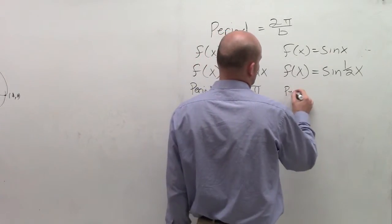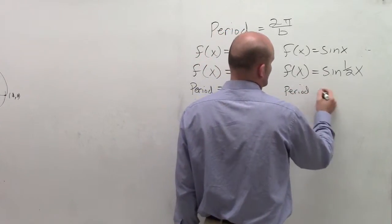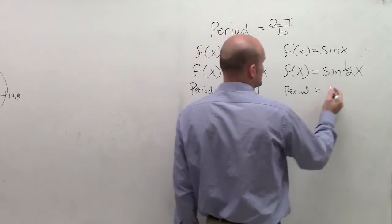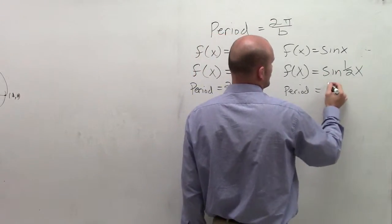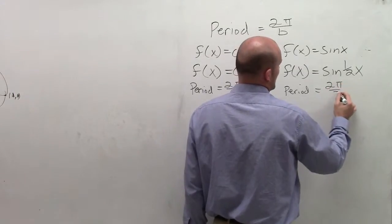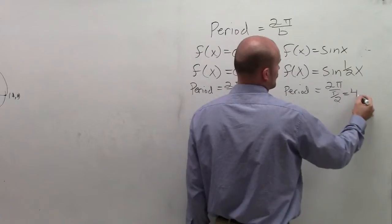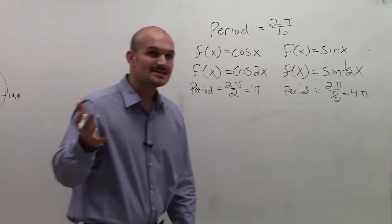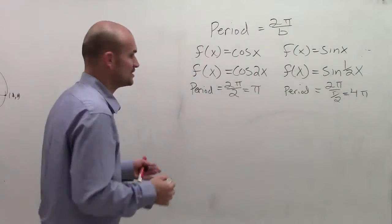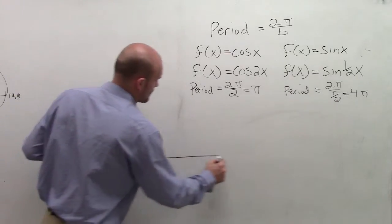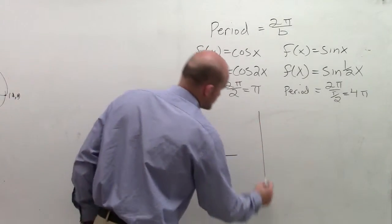Over here, if I wanted to find the period, my b is not just 1, it's not just x, but now it's going to be 2 pi divided by 1 half, which is equal to 4 pi. So let's take a look and see exactly what this is going to do to our two graphs. I'm going to try to graph the cosine function here and the sine function here.